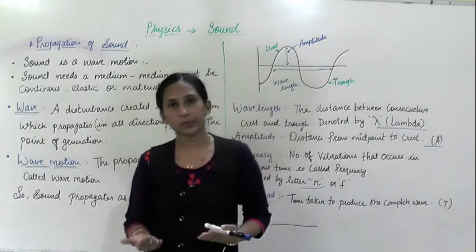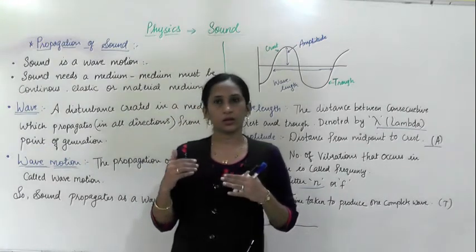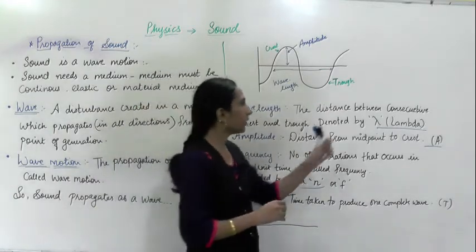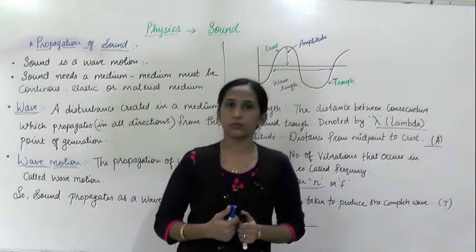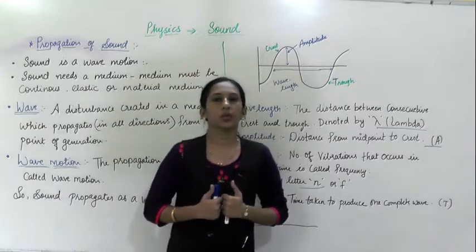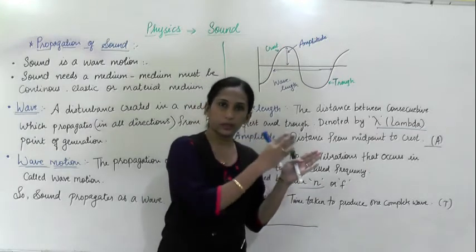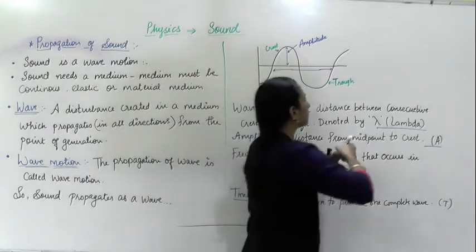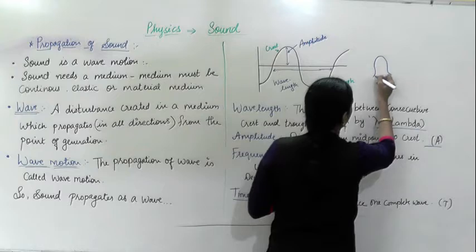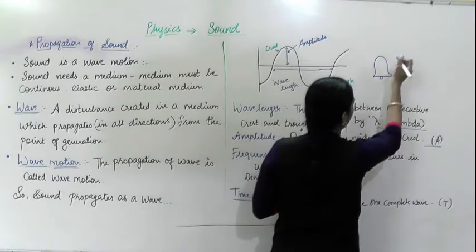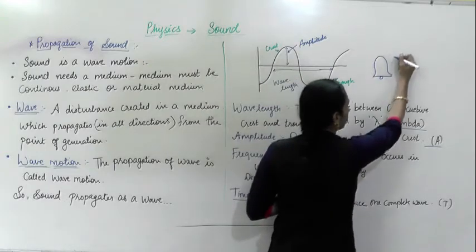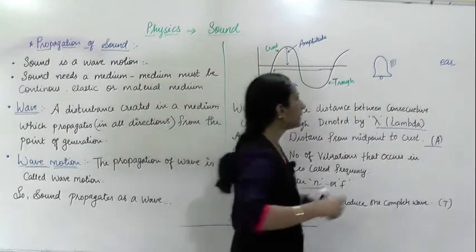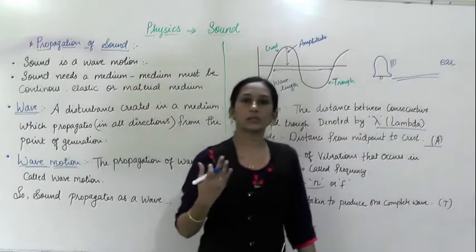I am going to explain how the sound travels from a point to the listener's ear. I will give you an example — if a bell is ringing, how the sound of the bell propagates from that place to our ears. So suppose this is the bell here. The bell rings, it produces sound, and we are going to study how this sound travels from one place and reaches our ear.